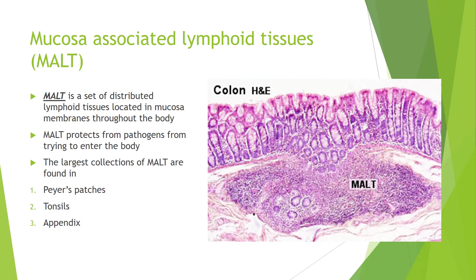Mucosa-associated lymphoid tissue, also known as MALT, is a set of distributed lymphoid tissues located in the mucous membranes throughout the body. MALT protects against pathogens trying to enter the body. The largest collections of MALT are found in Peyer's patches, tonsils, and the appendix.